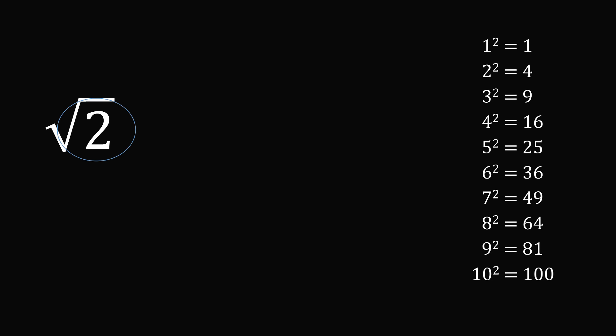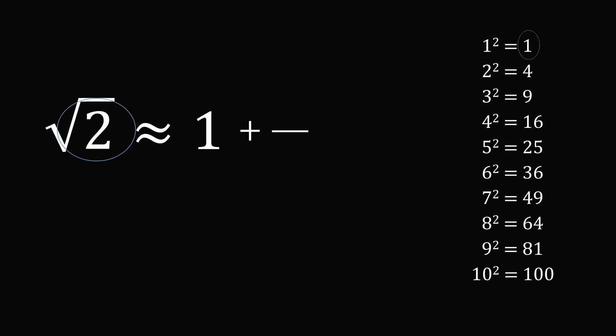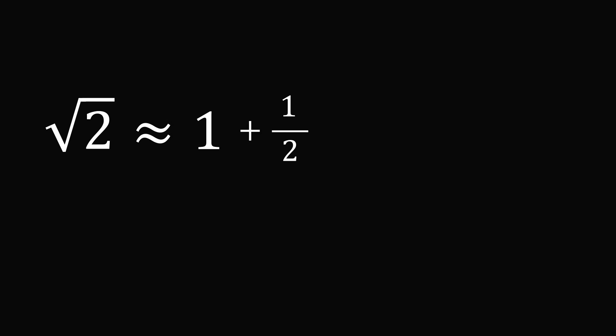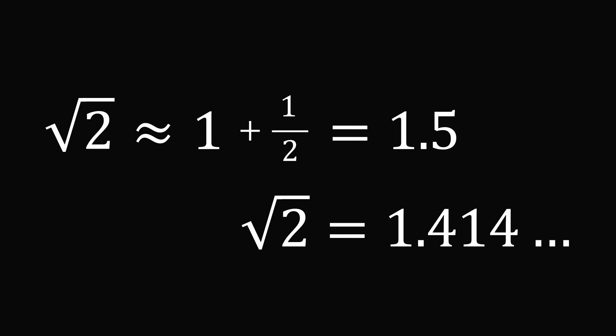Let's now return to estimating the square root of 2 using the Babylonian method. We start by asking which square number is closest to 2 — the best we can do is 1, which equals 1 squared. So the square root of 2 is approximately 1. The numerator is 2 minus 1, which equals 1, and the denominator is 1 times 2, which equals 2. This gives us an estimate that the square root of 2 is approximately 1 plus 1 half, which equals 1.5. But the actual value starts as 1.414, so this is not accurate to 5 decimal places as seen on the clay tablet.